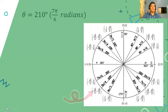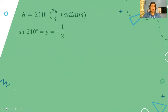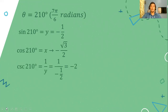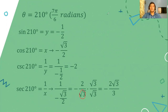Now let's get the exact values. Using the trigonometric point, sine 210° equals negative 1/2 (the y-value). Cosine 210° equals negative √3/2 (the x-value). For cosecant, we take the reciprocal of sine: 1 divided by negative 1/2, which is negative 2. For secant, we take the reciprocal of cosine: 1 divided by negative √3/2, which gives negative 2 over √3. We rationalize the denominator — since √3 is not accepted in the denominator — to get the final exact value of secant 210°.